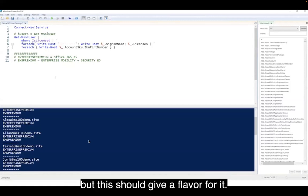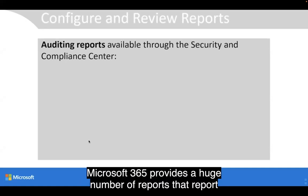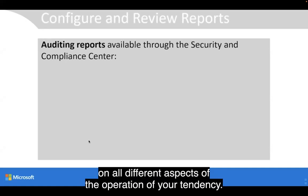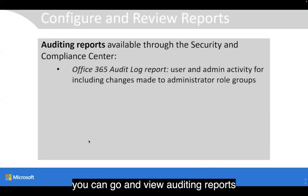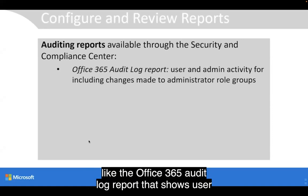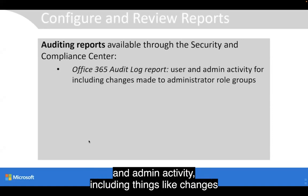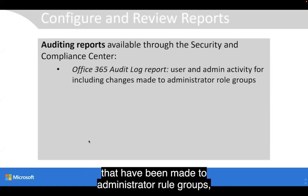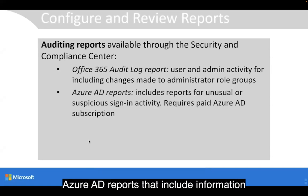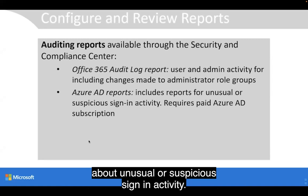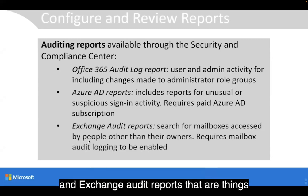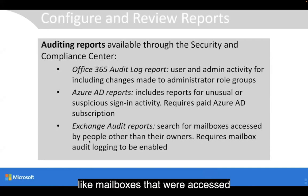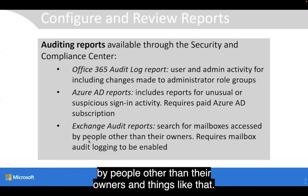Microsoft 365 provides a huge number of reports covering all different aspects of the operation of your tenancy. For example, in the Security and Compliance Center, you can view auditing reports like the Office 365 audit log report that shows user and admin activity, including changes made to administrator role groups. Azure AD reports include information about unusual or suspicious sign-in activity — some of the more advanced functionality requires an additional paid Azure AD subscription. There are also Exchange audit reports covering things like mailboxes accessed by people other than their owners.